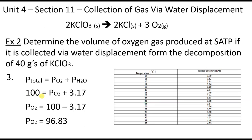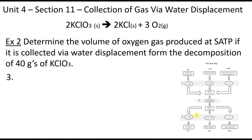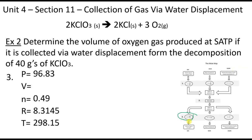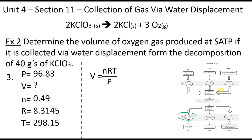In step three, we use the Ideal Gas Law rearranged for volume: V = nRT/P. Plugging in 96.83 kPa, 0.489 moles, R = 8.3145, and T = 298 K, we get a final volume of 12.53 liters. So there are the two types of questions we'll encounter: a straightforward single-substance question like the CO2 example, or a mole map question like this KClO3 decomposition.